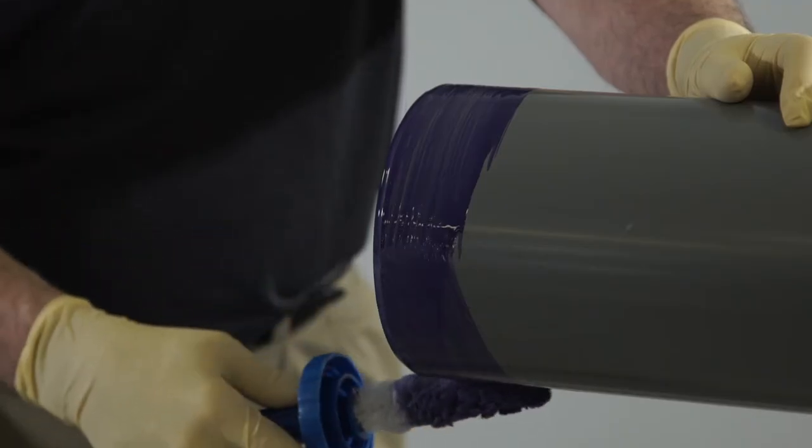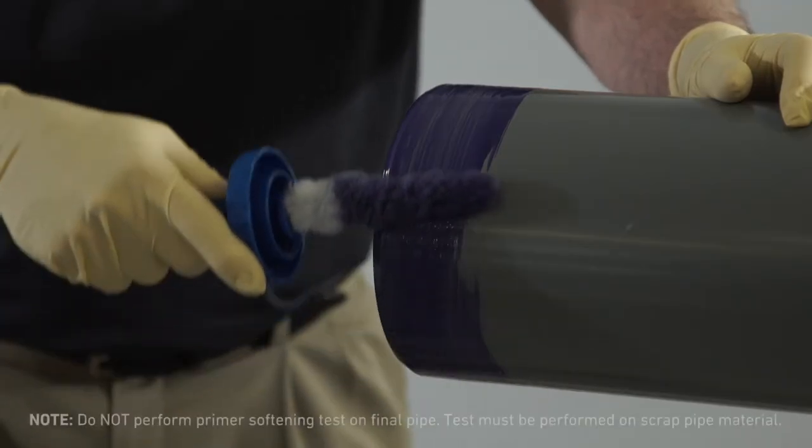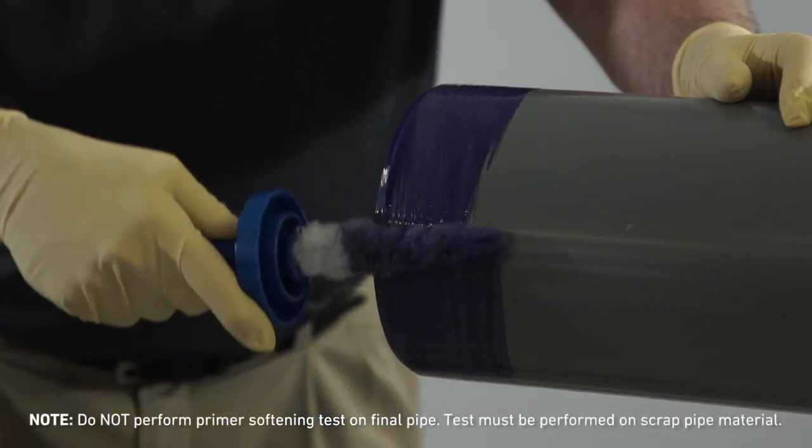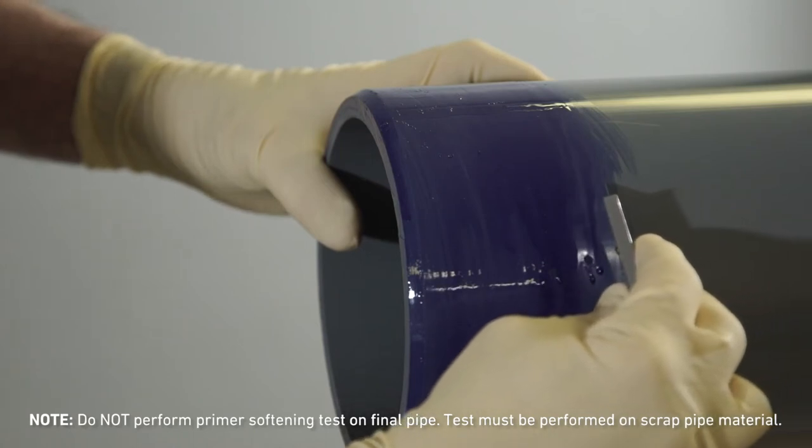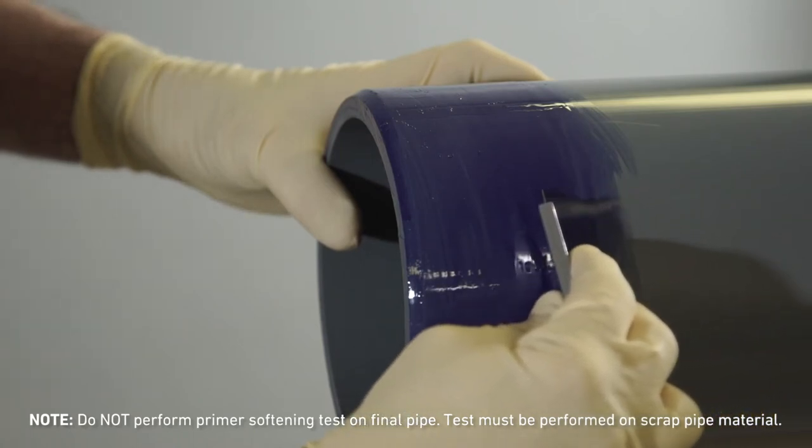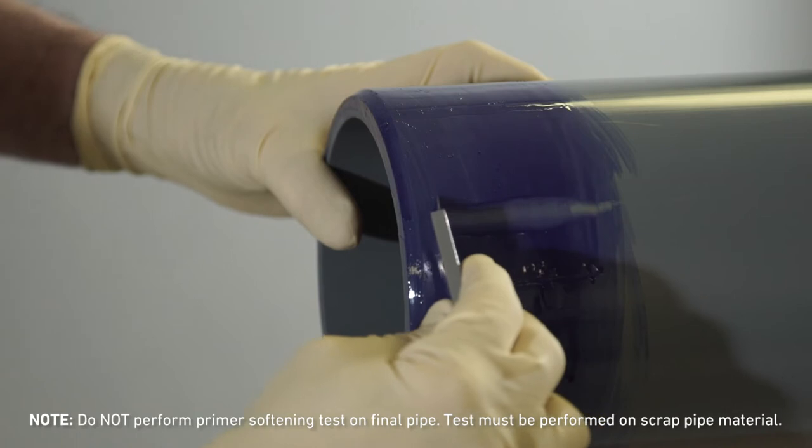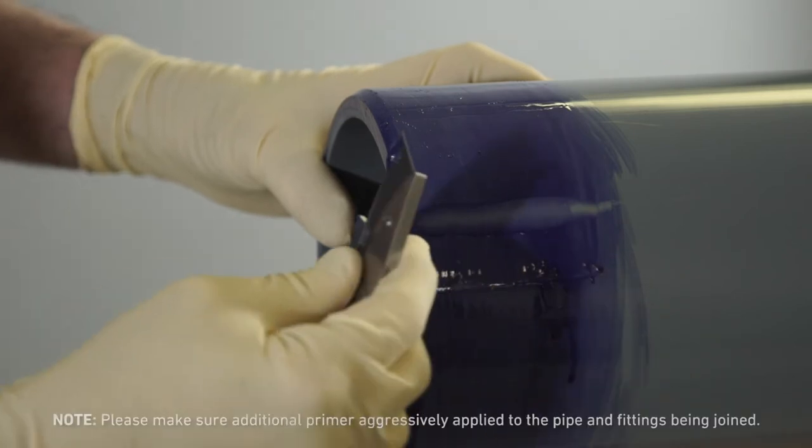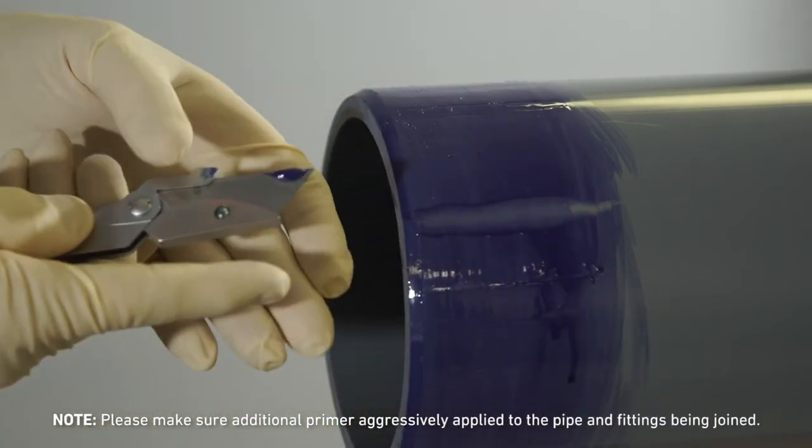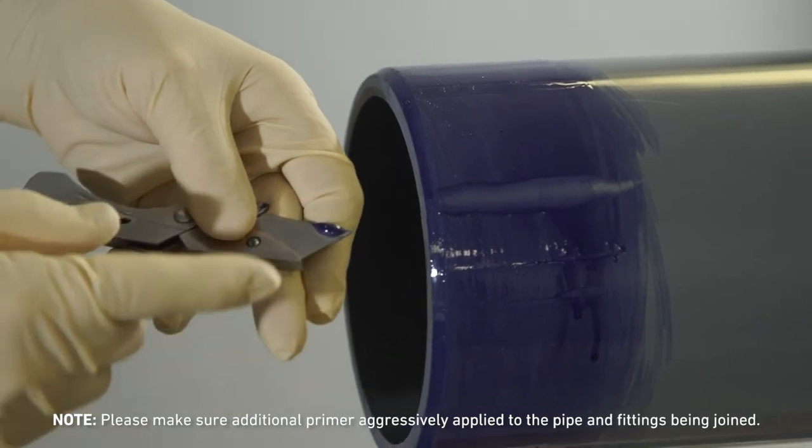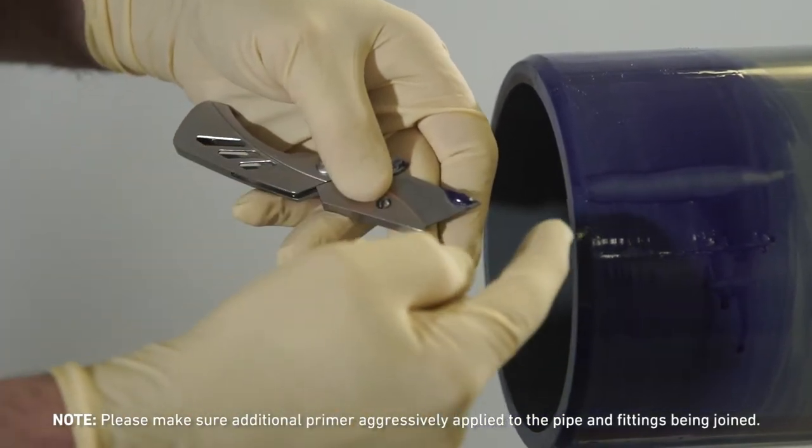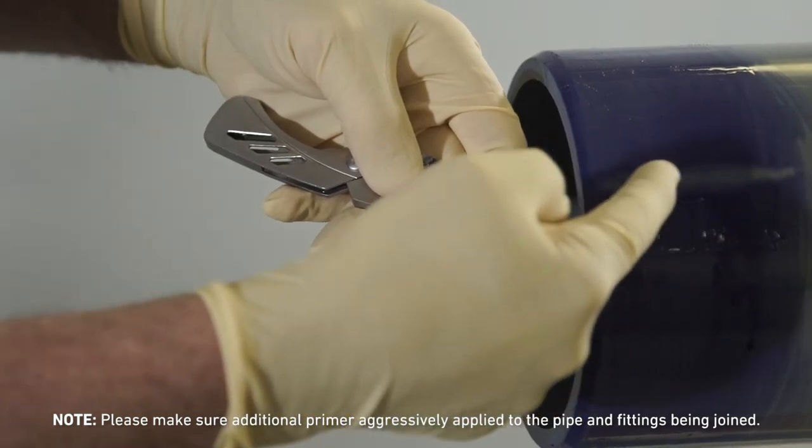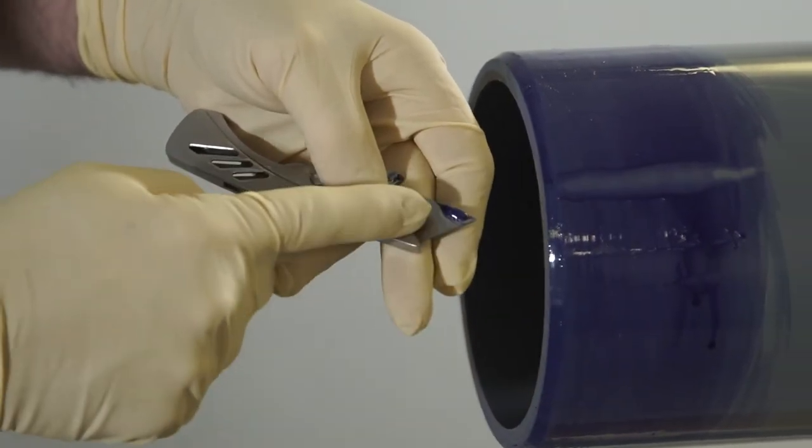Before solvent welding the assembly, ensure that the surface can be softened suitably by the primer on a piece of scrap pipe. This can be done using a pocket knife. The primer and pipe should scratch. This means that the wall is now sufficiently softened and ready for solvent cement. If the primer did not soften the OD of the pipe, please reapply additional primer. If successful, the following solvent welding process must be completed without interruption.